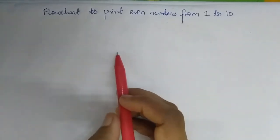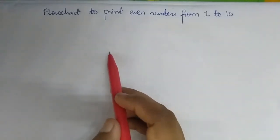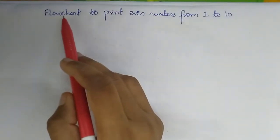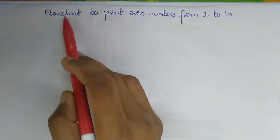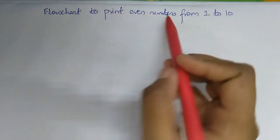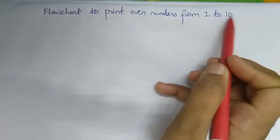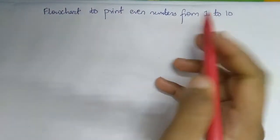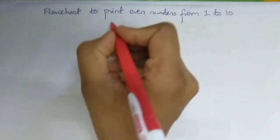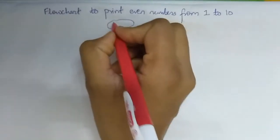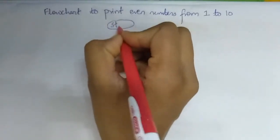Hello everyone, welcome back to my channel. In this video we will learn how to draw a flowchart to print even numbers from 1 to 10. First, we will make a start symbol.